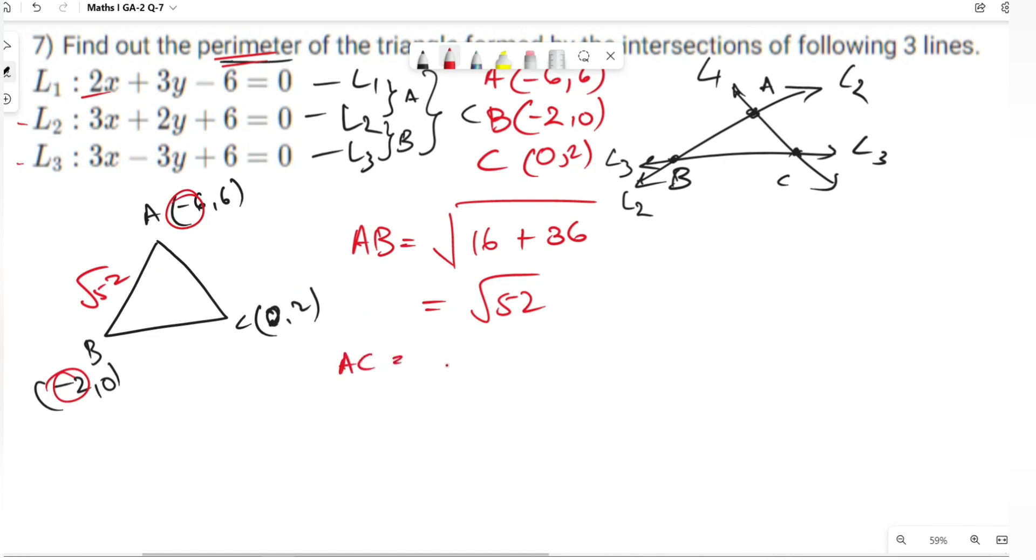Length of AC is under root: (x1 minus x2) whole square is 36 plus (y1 minus y2) whole square is 16, which is under root 52.